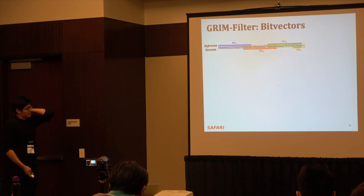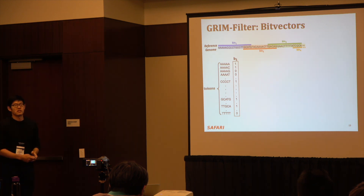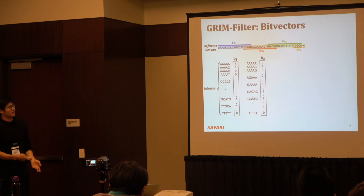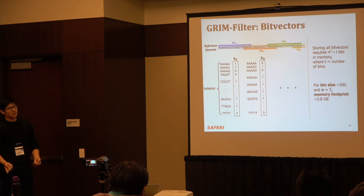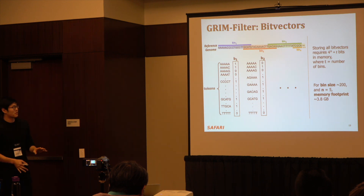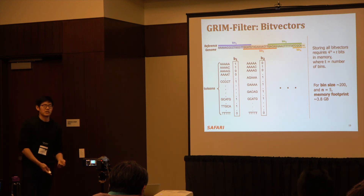Looking at the capacity overhead of these bins: every bin across the whole genome requires a bit vector, and the bit vector size depends on the token size. Because we have 4 nucleotides, the number of bits needed is 4^n, where n is the token size. To calculate the total size, we multiply 4^n by t, where t is the number of bins. Using a bin size of 200 and a token size of 5 results in a memory footprint of just under 4 gigabytes, which is perfectly reasonable for today's memory devices.